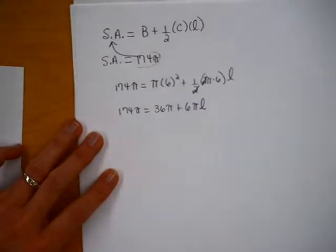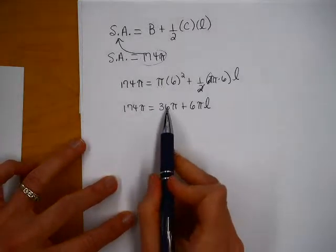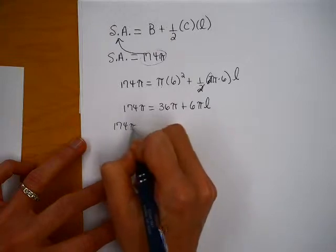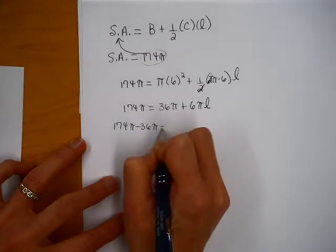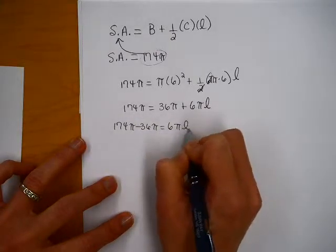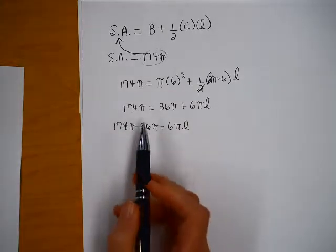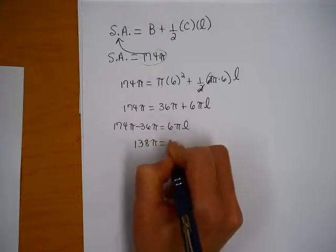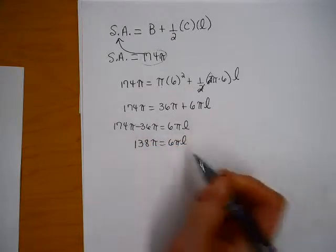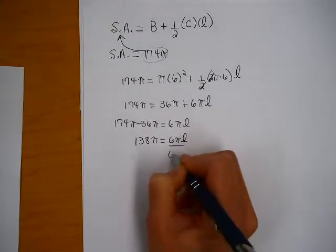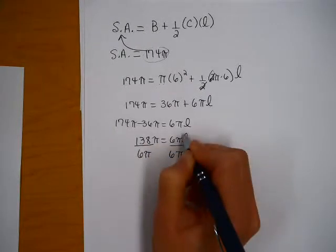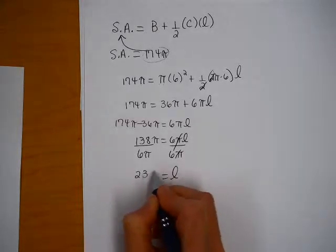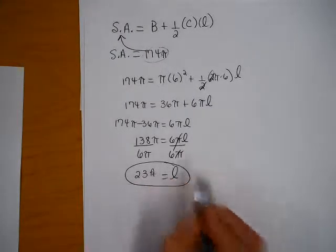Now, solve this for L. This is just a normal linear equation to solve. Start by subtracting 36 pi from both sides. And so, once I subtract 174 minus 36 pi, I get 138 pi equals 6 pi times the slant height. Then I divide both sides by 6 pi, and so my slant height would be 23 feet for that cone.